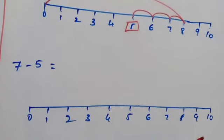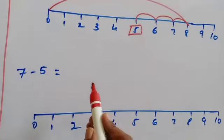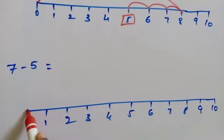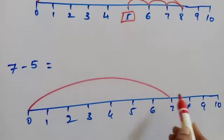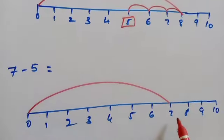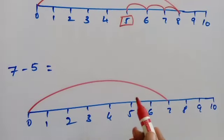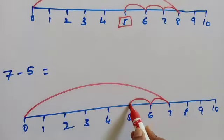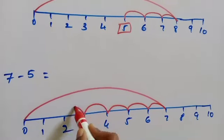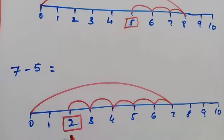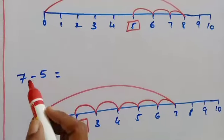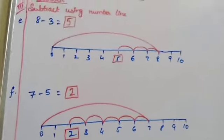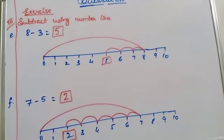The next one is 7 minus 5. From 0 we jump directly to 7. The next number is 5, so from 7 we count backward 5 numbers: 1, 2, 3, 4, 5. The answer is 2. So 7 minus 5 is equal to 2. Is it easy, children? Yes, of course it is very easy.